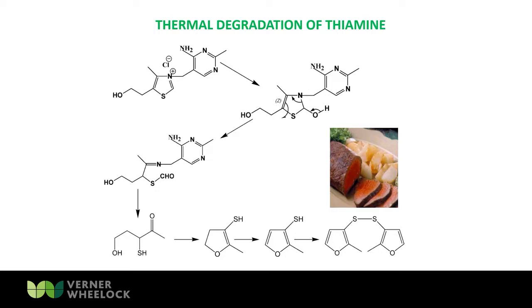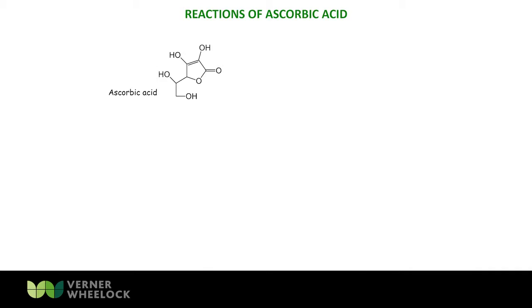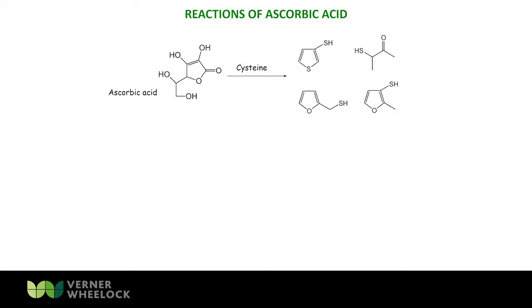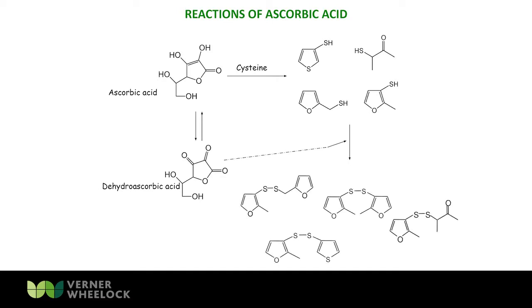Isn't that amazing — formed from two routes, or a massive coincidence? But the story isn't over. Thiamine is vitamin B1. We've also got ascorbic acid — vitamin C — in meat, and the reaction of ascorbic acid with cysteine forms a series of sulfur compounds, one of which is our 2-methyl-3-furanethiol. Ascorbic acid also exists as dehydroascorbic acid, and in that form it oxidizes these compounds to form the dimers — and once again we get our bis-disulfide, our powerful potent beef flavor compound.